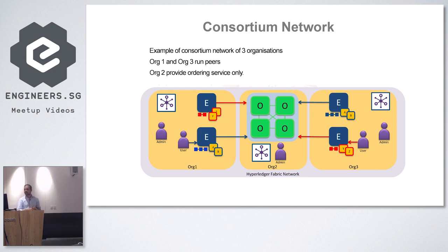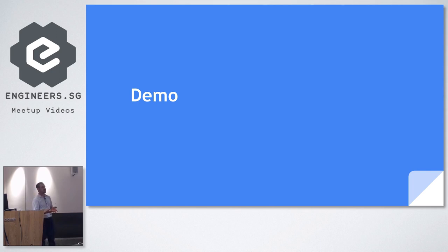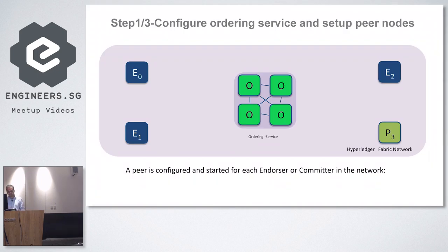This is the consortium network I will show in the demo. There are three organizations: two organizations have their own peers and network, and one organization has only the ordering service, which monitors and executes all transactions. For the demo today, I'm going to show how to deploy a network on Azure blockchain. There are two ways: Azure Workbench where you deploy chain code, or creating your own Azure VM and deploying the network. The Azure blockchain service is still in preview mode.